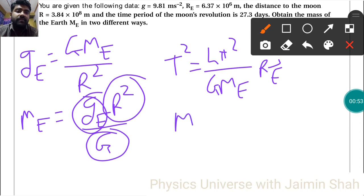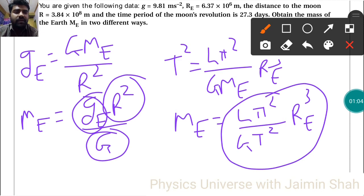Again solving for ME, we get ME equals 4π² upon GT² times RE³. We have all the values, so by putting and calculating them, we will get ME in two different ways.